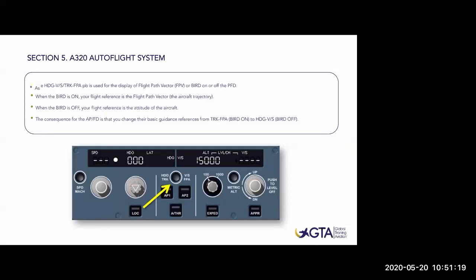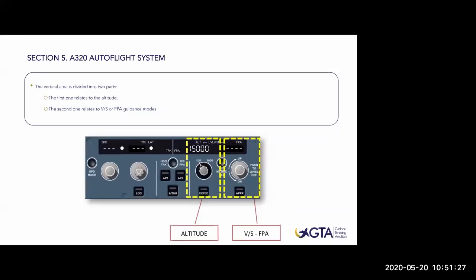The vertical speed/flight path angle knob has no managed mode - only selected mode. If I push it, it performs 'push to level off', setting vertical speed to zero. It's the only knob with no manage mode. If I pull to set a vertical speed, for example minus 1500 feet per minute, I can set whatever vertical speed I want. This mode is very dangerous because it has top priority on the aircraft - the aircraft will fly minus 1500 feet per minute regardless of speed or configuration. Use it with caution.